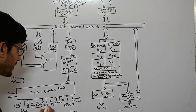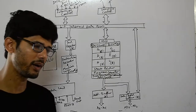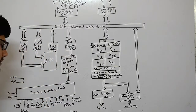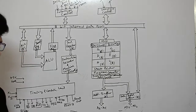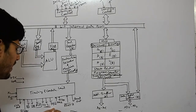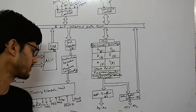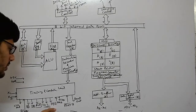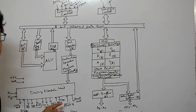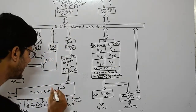S0 and S1 are status signals indicating different states such as opcode fetch, memory read, memory write, I/O read, and I/O write. The IO/M bar is a single pin with dual function: when high (logic 1) it selects input/output, and when low (logic 0) it selects memory.